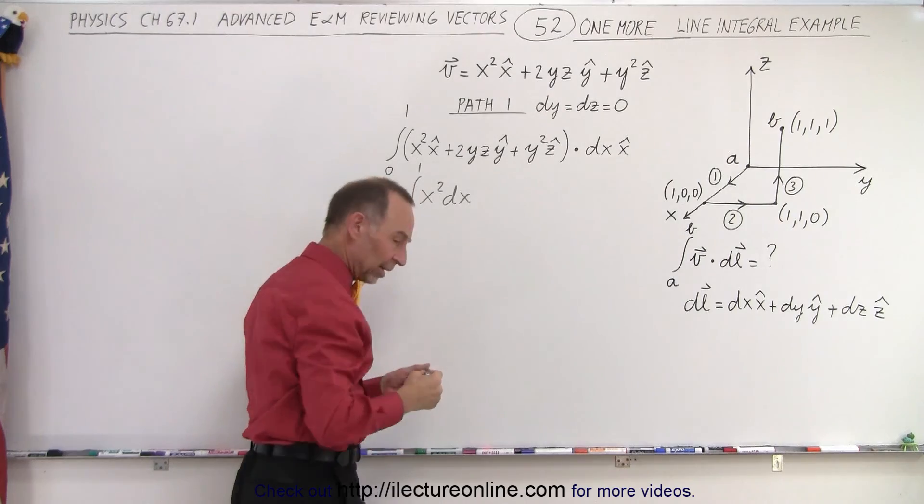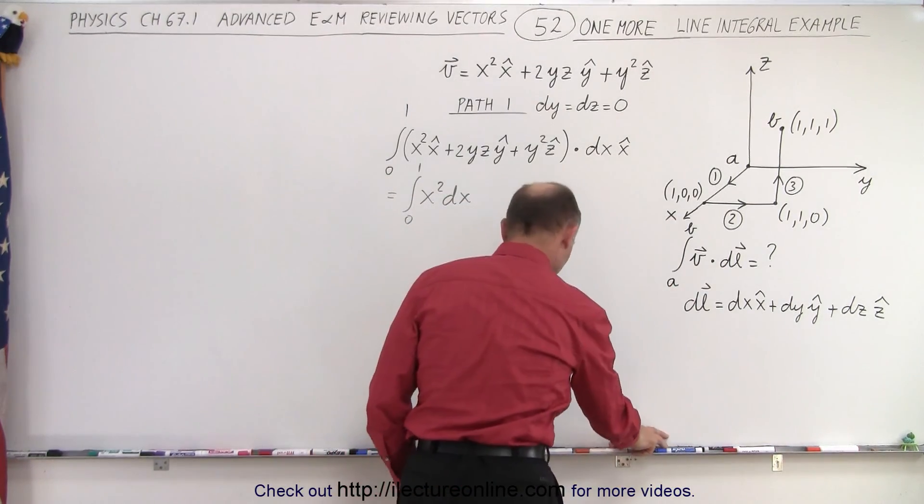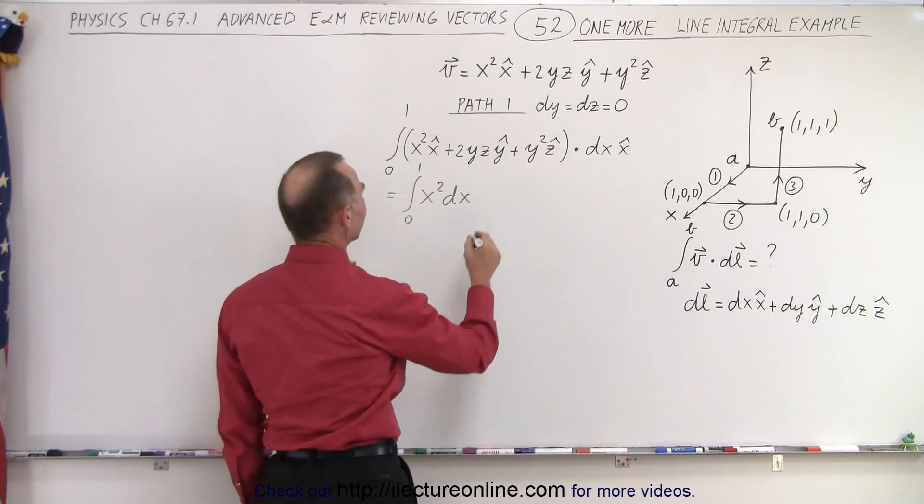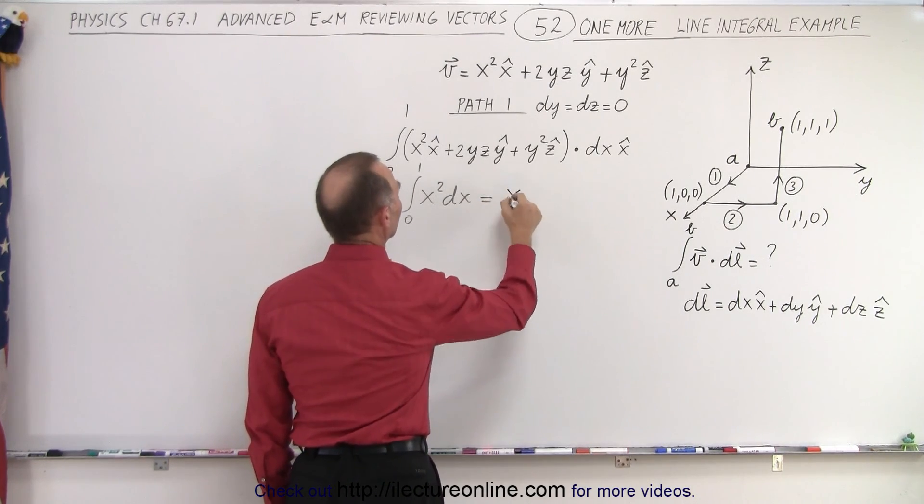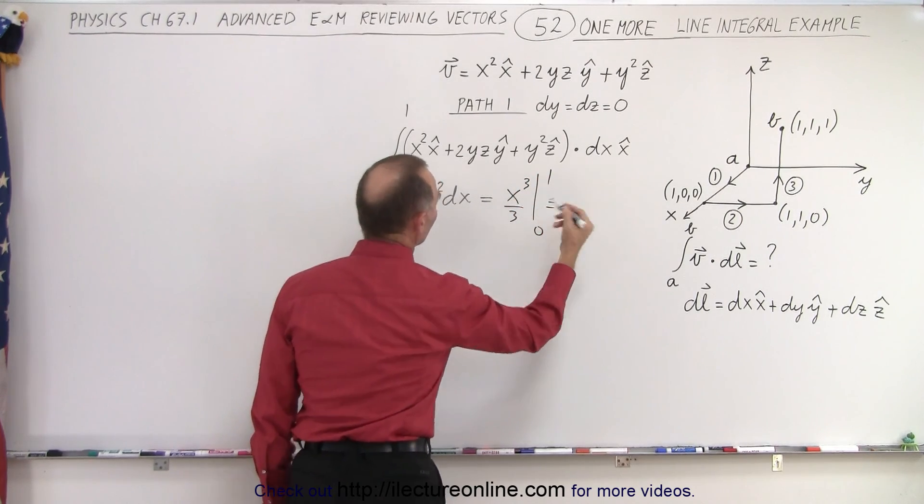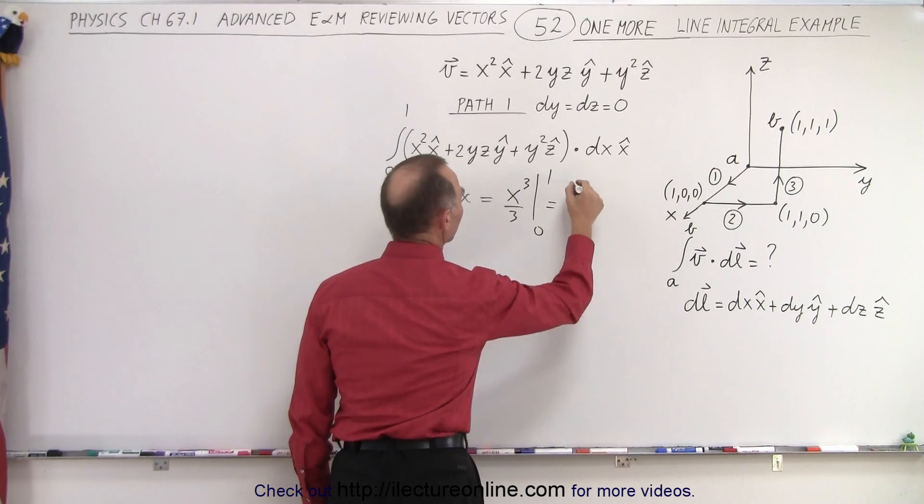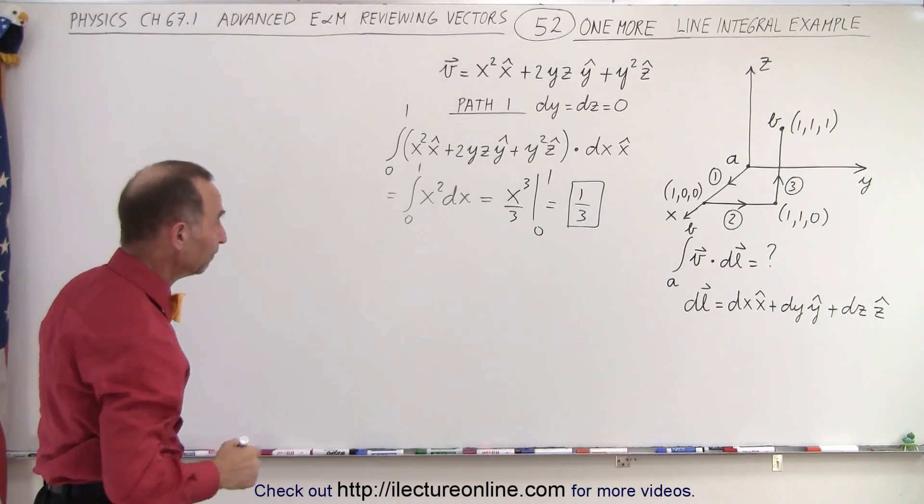So this is equal to x to the third power over 3, evaluated from 0 to 1, which is going to be equal to 1 over 3. So that's the value we get when we do the line integral along path number 1.